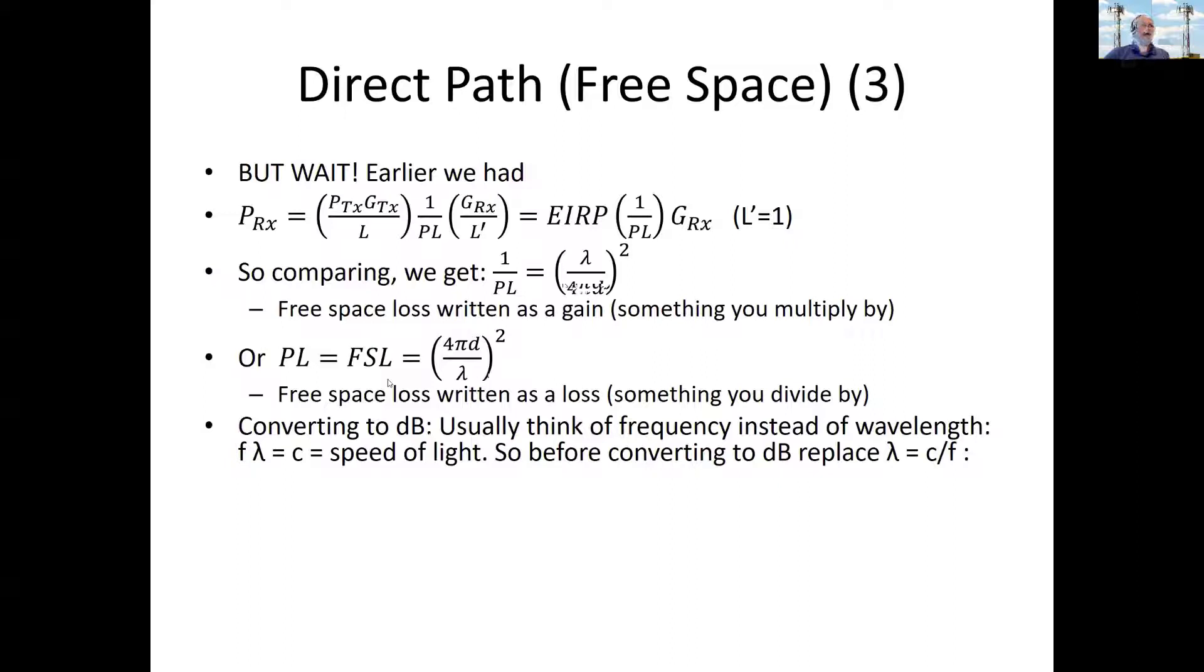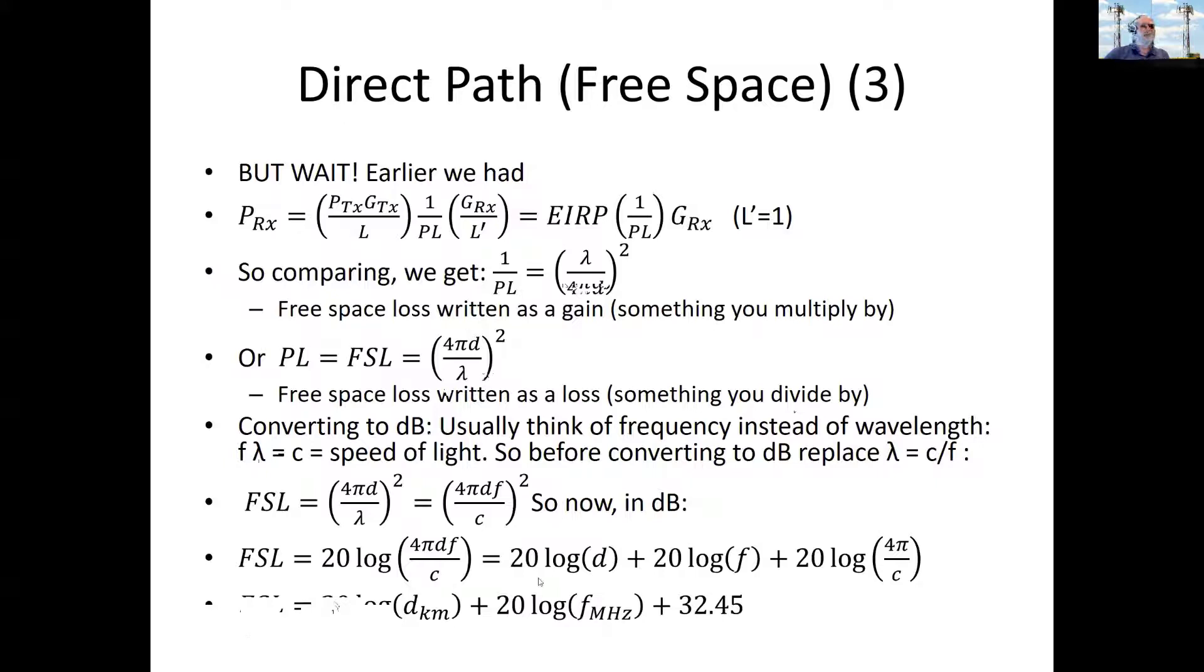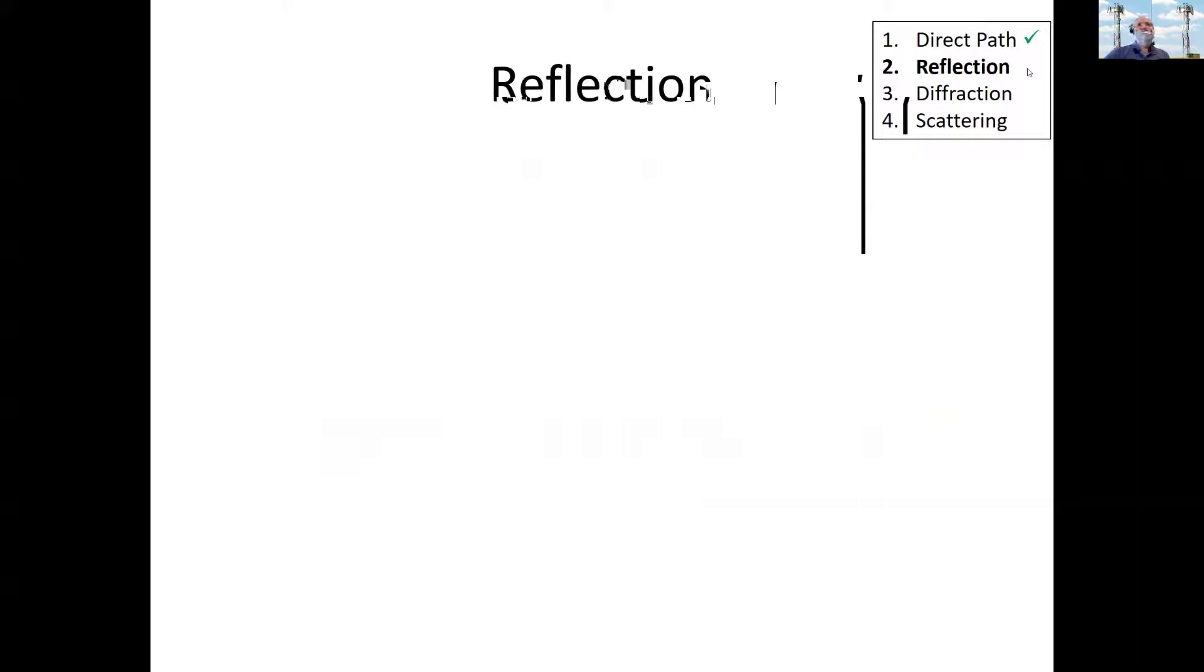And you do some conversions. People usually don't like to write things in terms of lambda. They usually like to talk about them in terms of frequency. And frequency times lambda is the speed of light. So I do a little algebra here, and generally we'll convert into dB. You end up, after you put in some unit conversions here, with a very familiar equation, if you're in RF, of the free space loss equation. 20 log d in kilometers plus 20 log f in megahertz plus 32.45. Well, that's great. That takes care of the direct path.